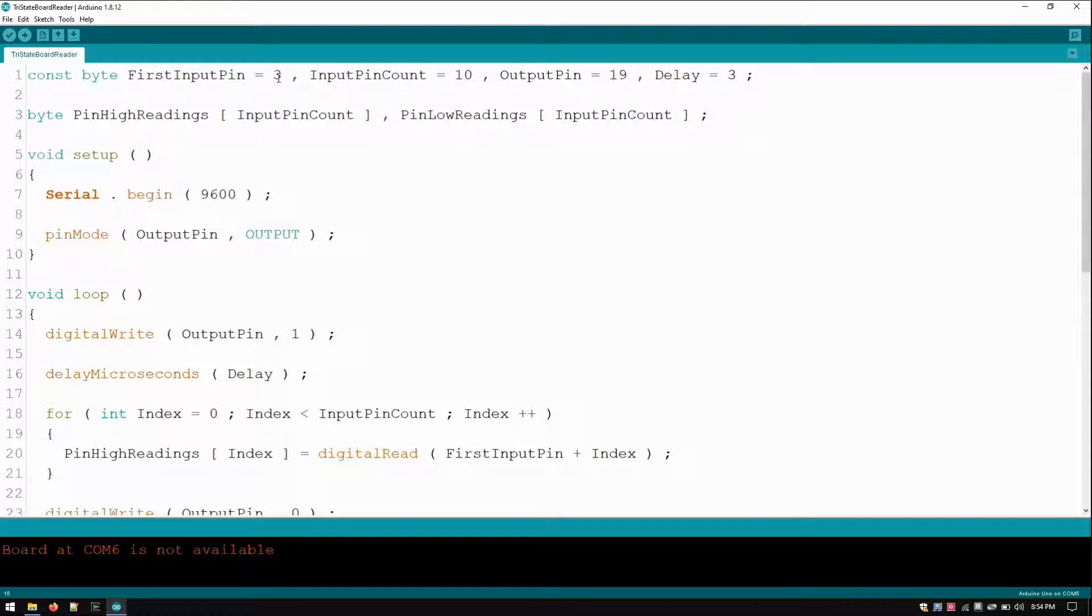So first I named my pins. I started pin three to read in the signals and there's 10 of them. So that's pins three through 12. And then the control signal will be on pin 19. I'll get to the delay in a moment.